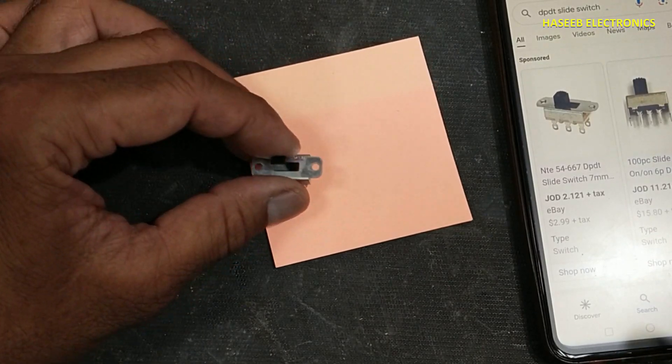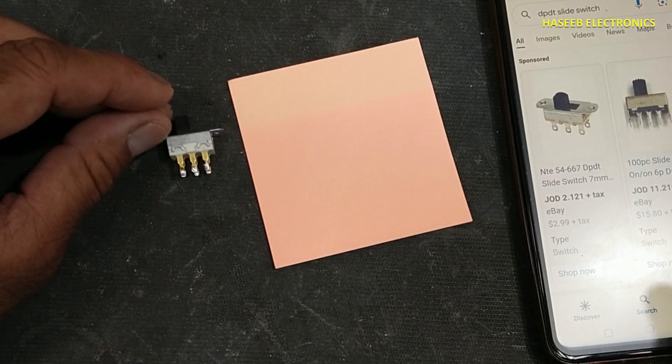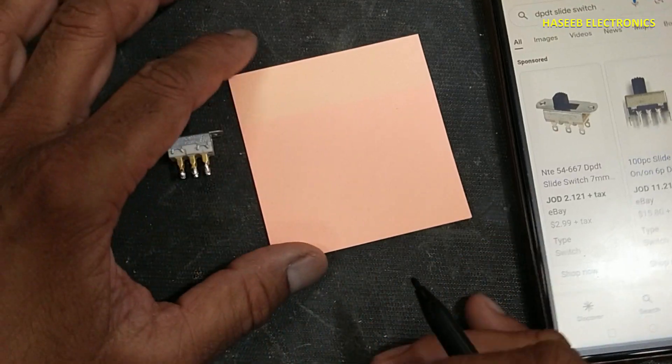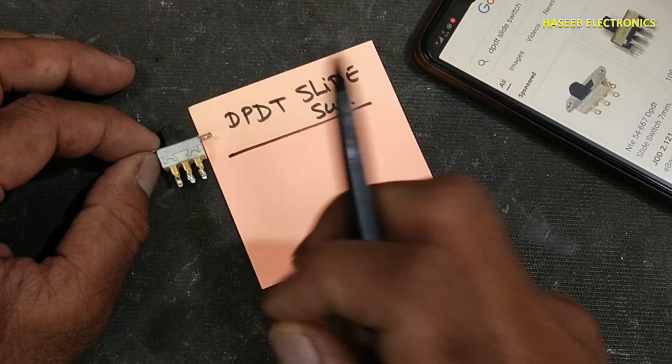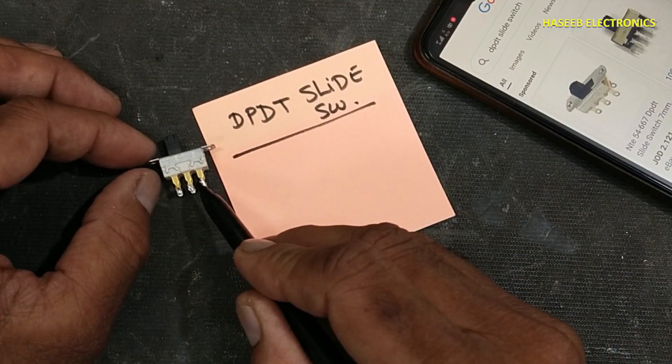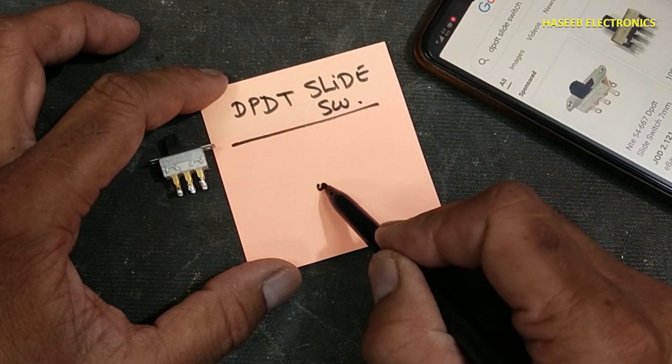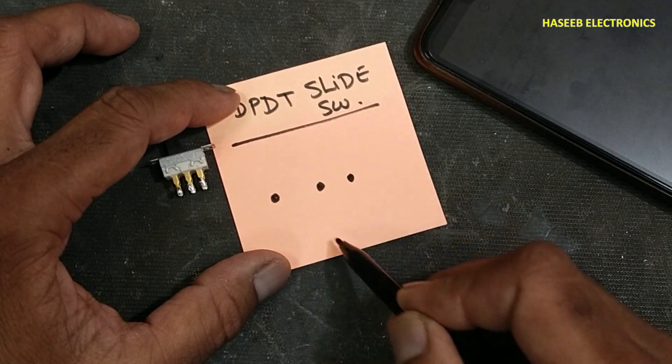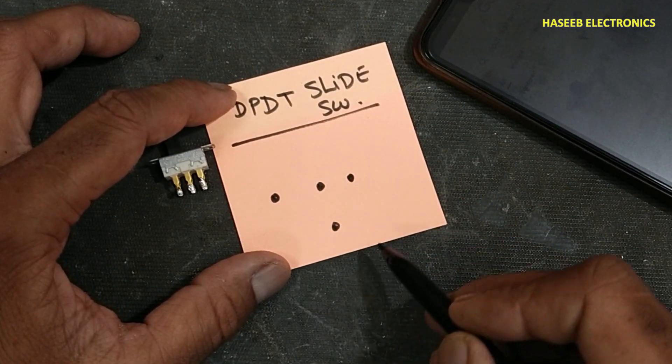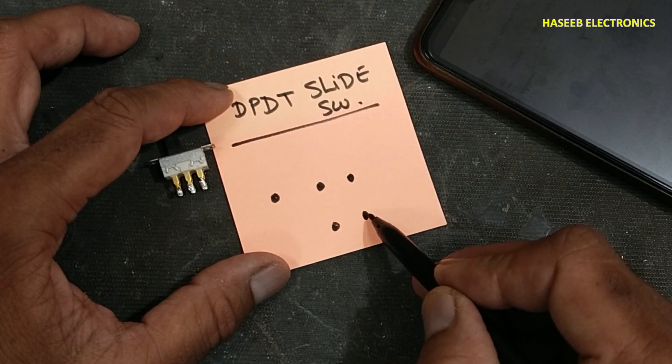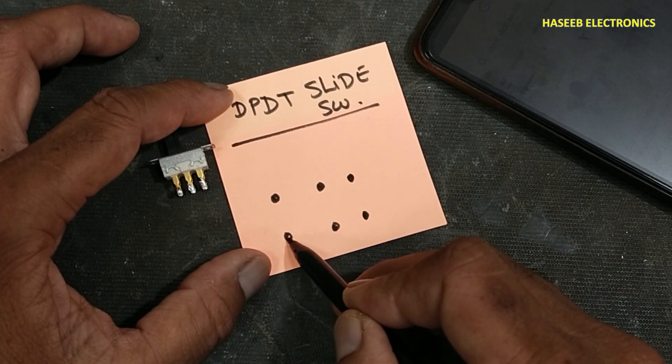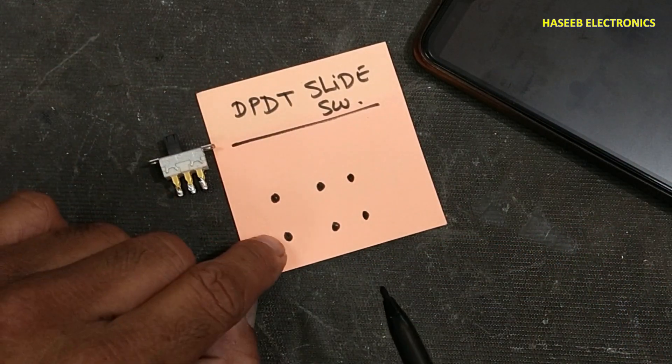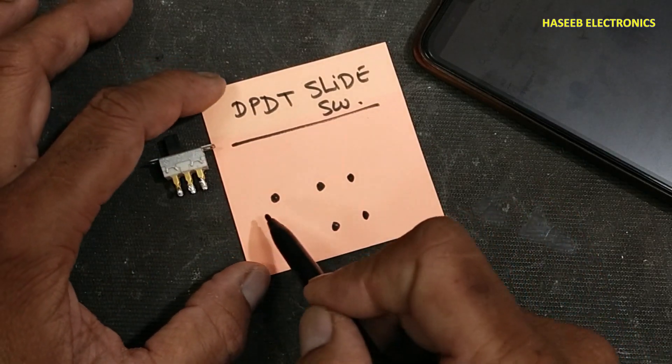Welcome back to my channel. How we can test this DPDT slide switch. Double pole double throw, that means it has six contacts. This one is common, this is one out, second out. This is second common out from the second section, and out second out from the second section.